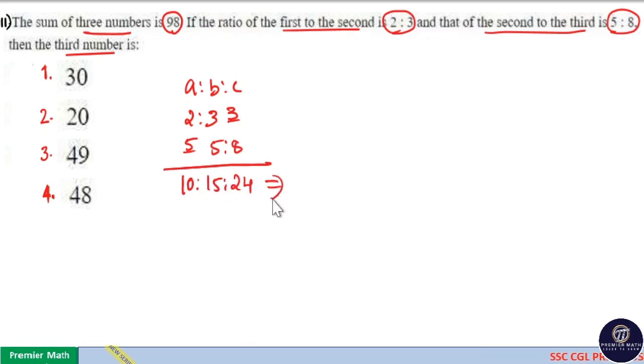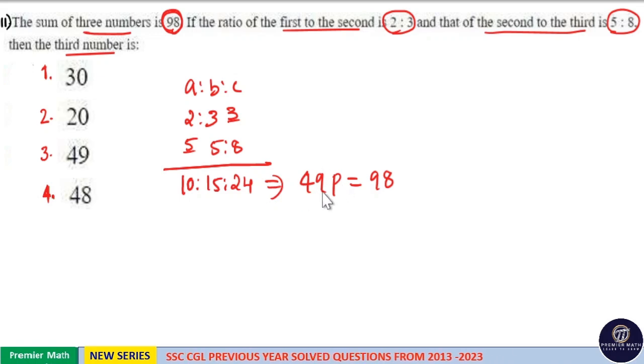Now you can see the sum is given in the question as 98. In ratio, the sum is equal to 10 plus 15 plus 24, which equals 49 parts. So this 49 parts equals 98.